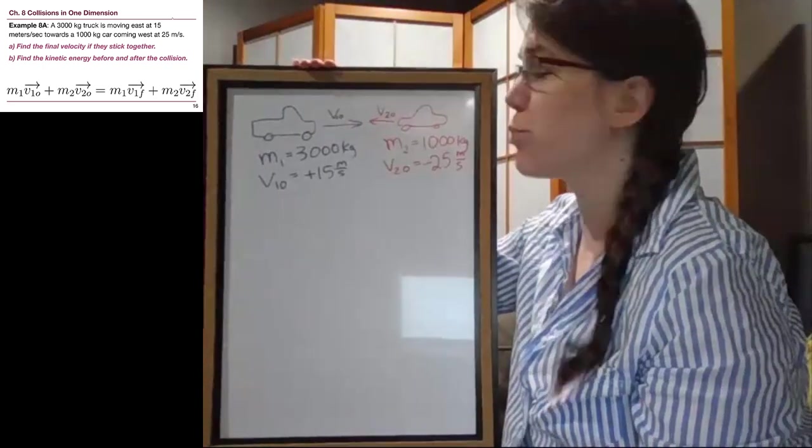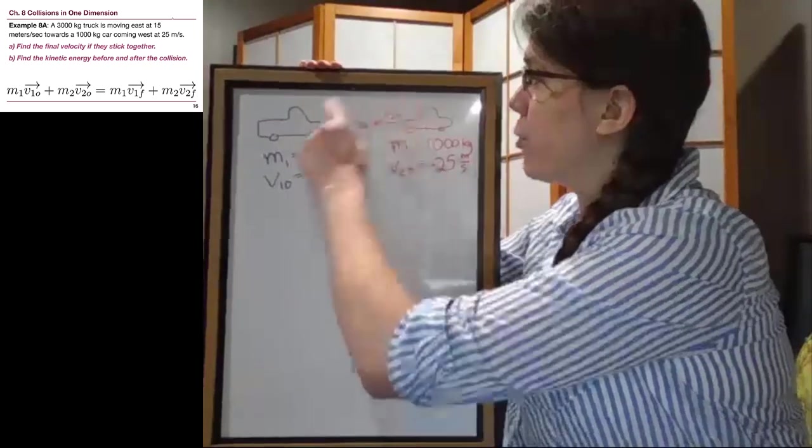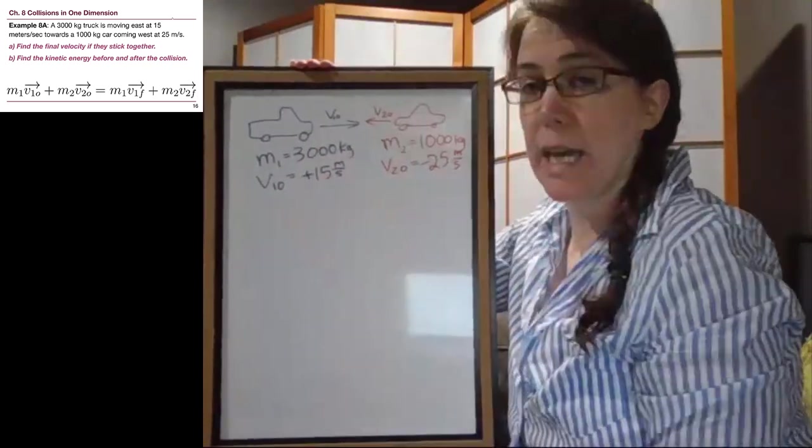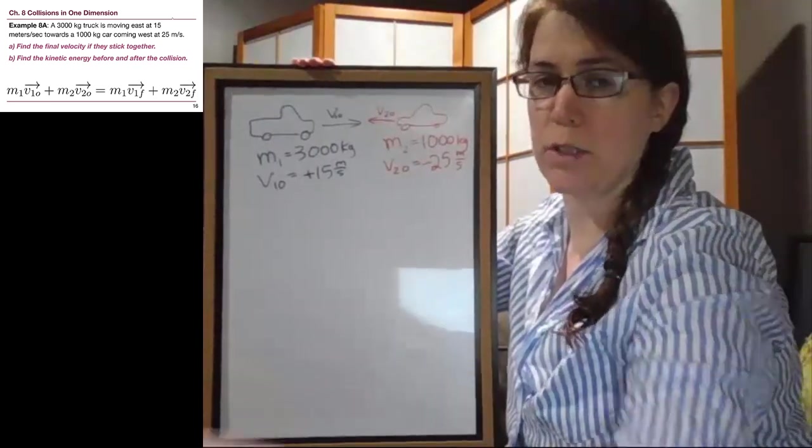Okay, so if we think about our standard problem-solving process, we have a picture is step one, the given information writing that down is step two, and then identifying our unknown is step three.